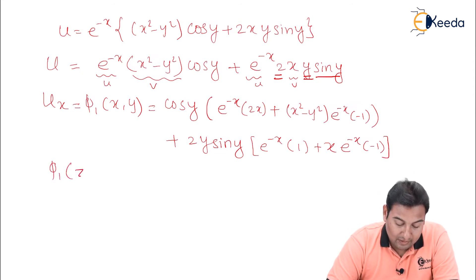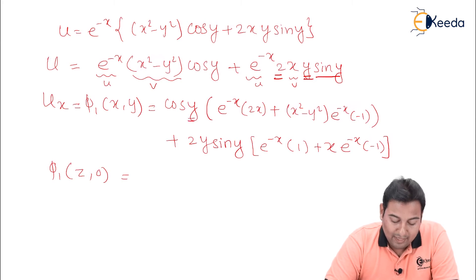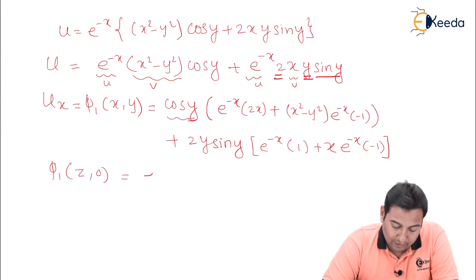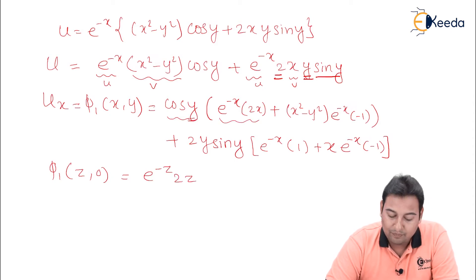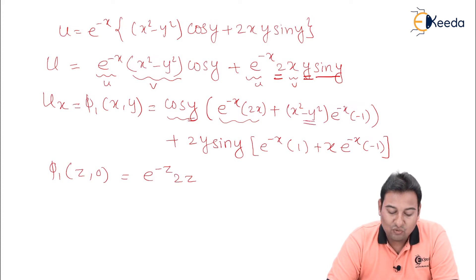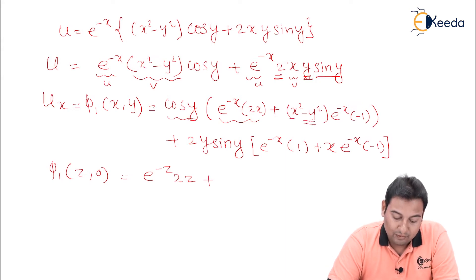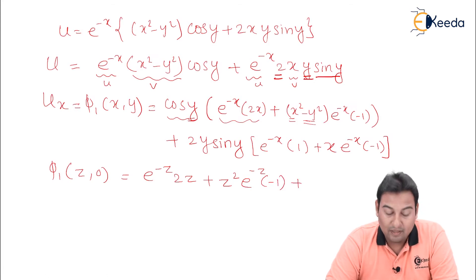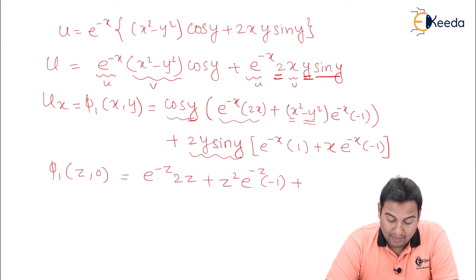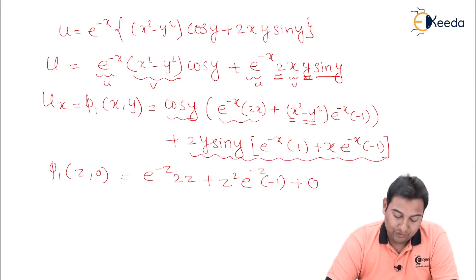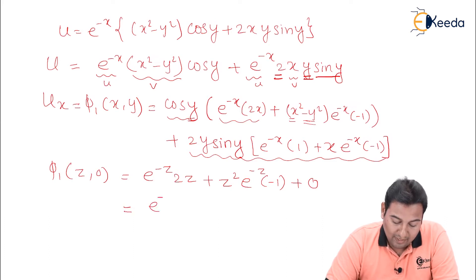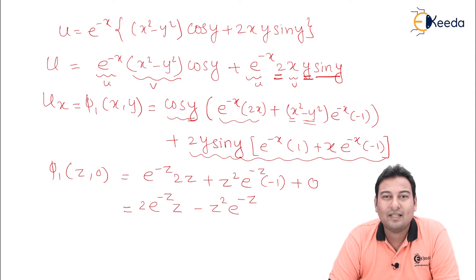Now let us find φ₁(z, 0) by substituting y = 0. Cos 0 equals 1, so that term becomes 1. The minus y squared term becomes 0. We get e raised to minus z times 2z from the first product-rule term. Then plus z squared times e raised to minus z into minus 1 from the second term. The 2xy sin y term becomes 0 because y is 0. So φ₁(z, 0) equals e raised to minus z times (2z minus z squared e raised to minus z).